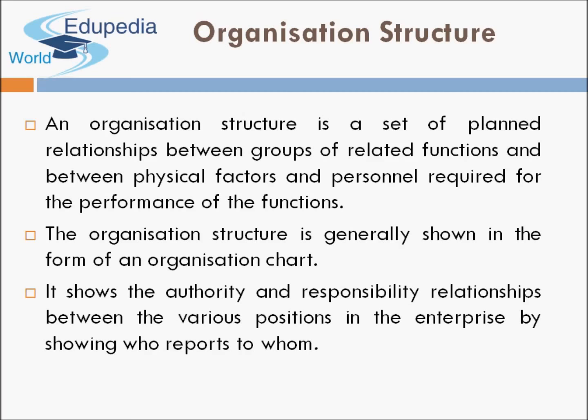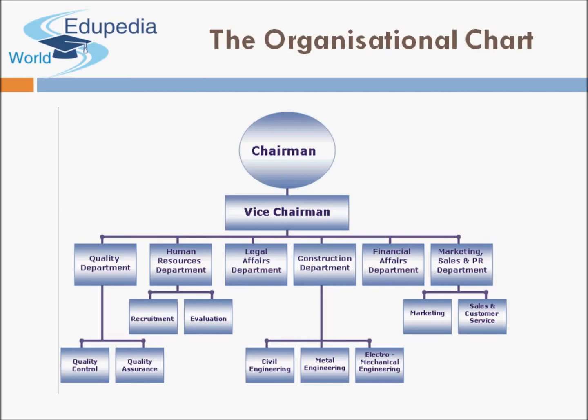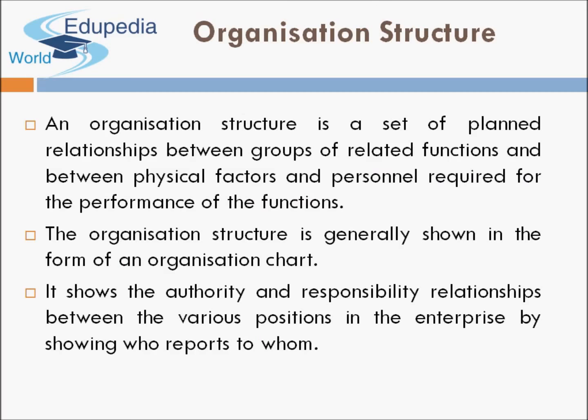An organization structure is a set of planned relationships between groups of related functions and between physical factors and personnel required for the performance of those functions. In the organization, different functions are grouped into different departments — that is called the organization structure. In every department, there is a further hierarchy, which also demarcates a proper communication channel within and between departments. The organization structure is generally shown in the form of an organization chart.